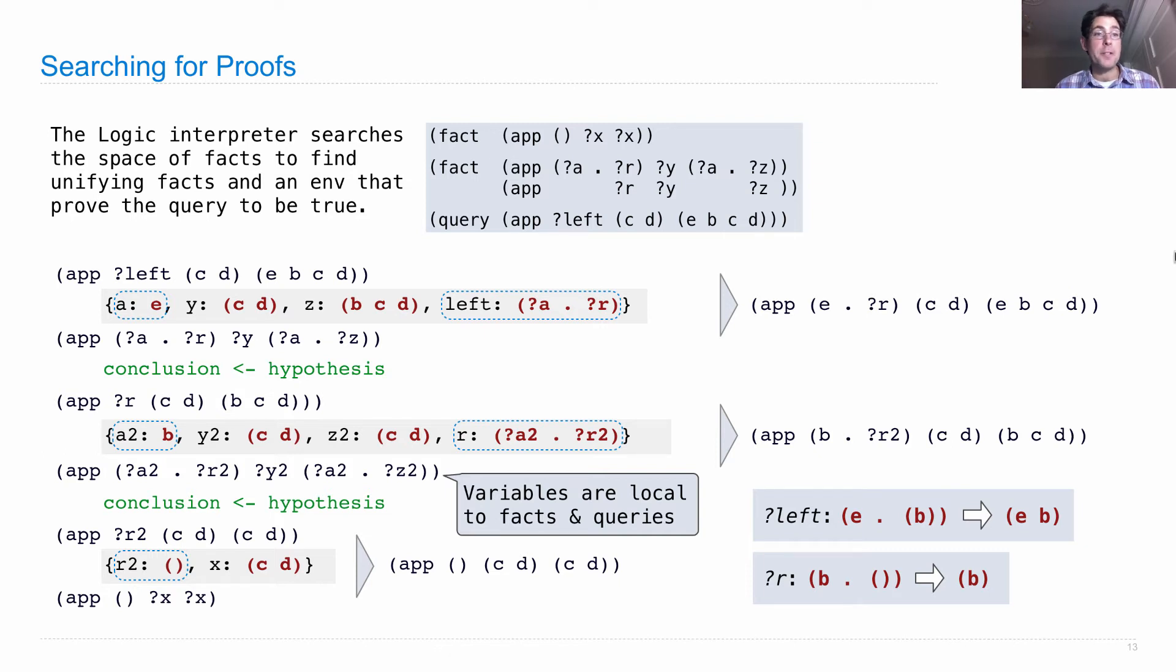So that's the process of searching for proofs, as we just repeatedly unify the query with the conclusion of some fact. And then if that fact has hypotheses, we need to unify those hypotheses with the conclusions of other facts. So starting from the query, we consider all facts that would prove it, starting with their conclusions and then trying to prove their hypotheses.